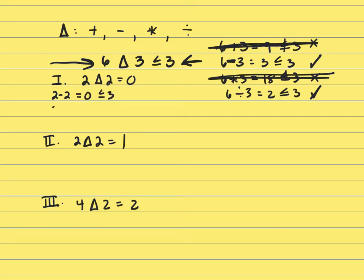Now let's try division. 2 divided by 2 equals 1. And that doesn't work since they're telling you it equals 0, and we just got 2 divided by 2 equals 1. So Roman numeral 1 will not be in there.